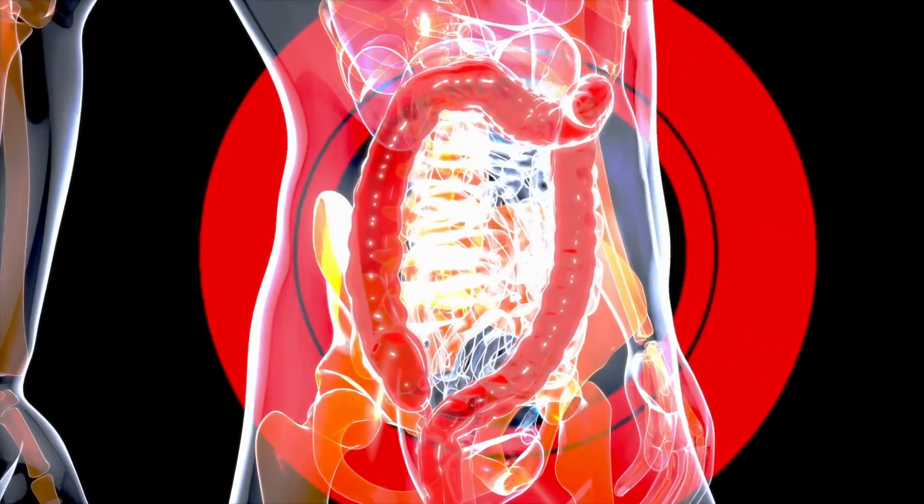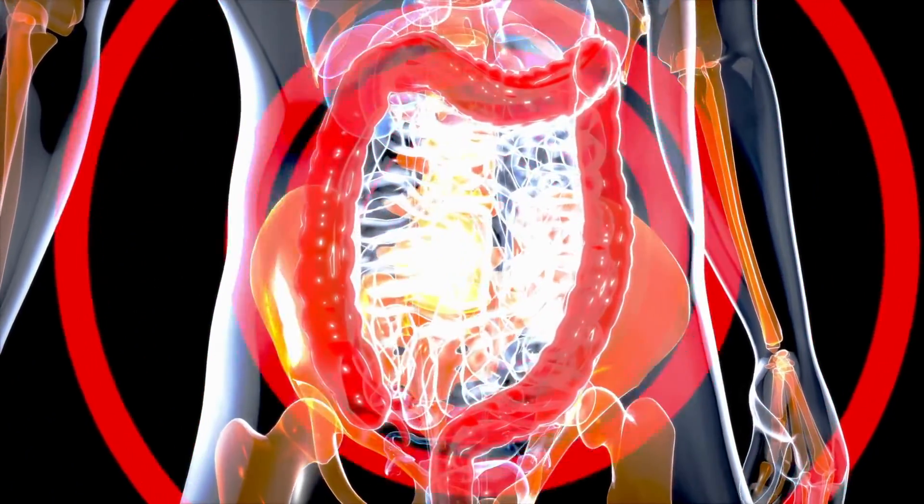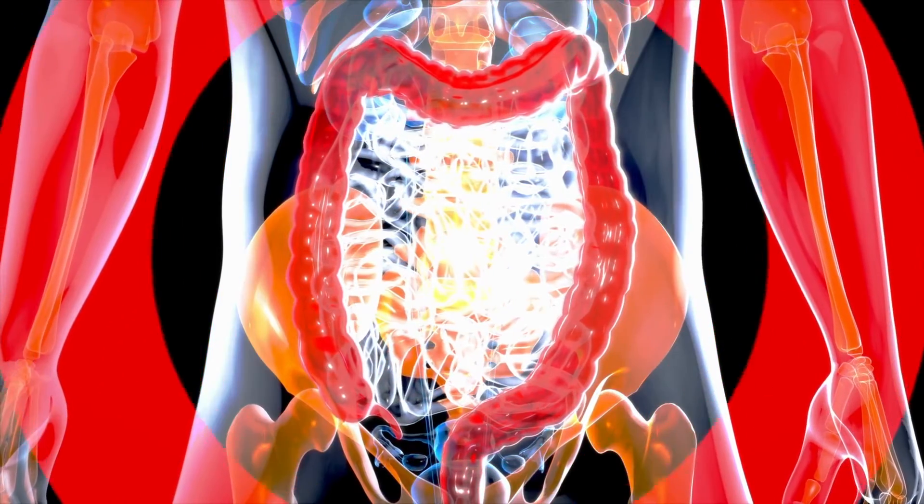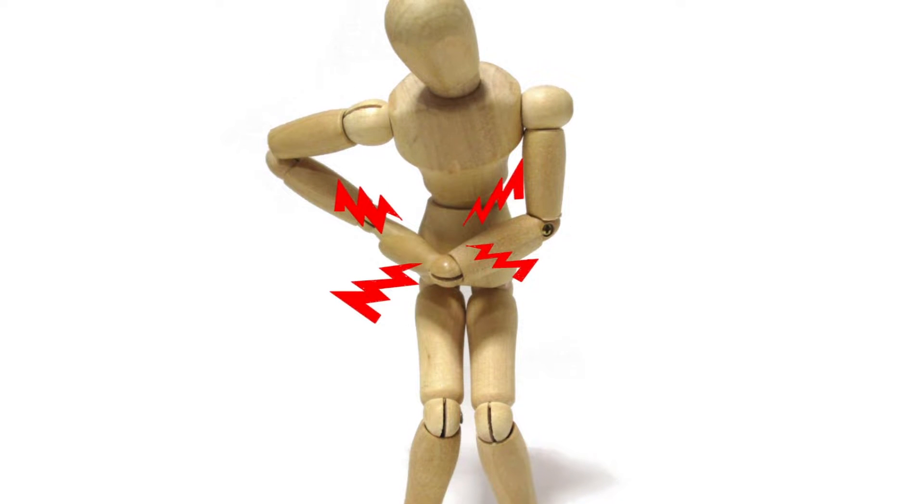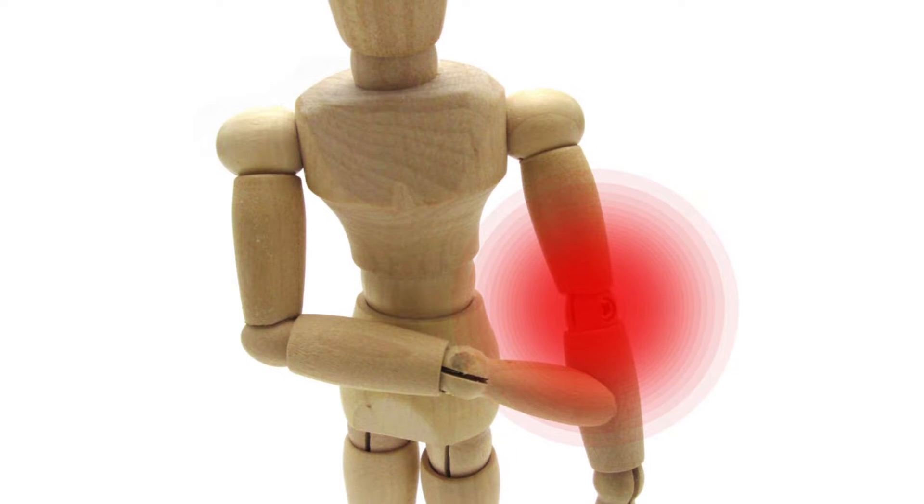The third type of arthritis is called reactive arthritis. Reactive arthritis is usually triggered one to four weeks after an infection. The most common infections that trigger reactive arthritis originate in the gut or urinary tract. Infections like hepatitis B, C, HIV, or even a tick bite can induce reactive arthritis. Usually, treating the cause of the infection will rapidly improve the arthritis symptoms.